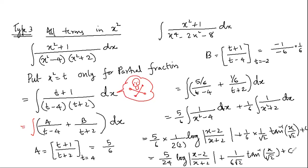Mark this as dangerous! A very common mistake: students integrate with respect to t instead of x, writing log(t−4) instead of using the x²−a² formula. In 10 papers, 4 students make this error. They also forget to convert t back to x². This question is asked regularly in exams.